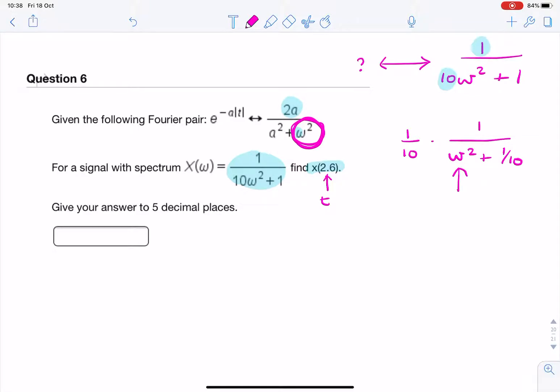The next step is we need to make this 1 look like that. We need a 2a in the numerator. And that's easy. We can simply multiply or divide. So multiply by 2a. So I can say that's 2a times 1 over 10. Sorry, what I meant was it's 1 over 2a times 1 over 10 times 2a over omega squared plus 1 over 10.